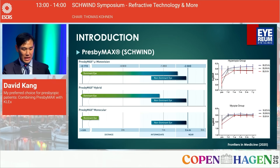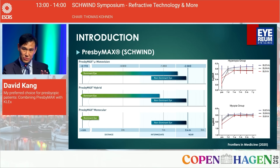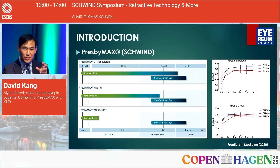This brings us to Presbymax. The common classification shows three iterations of Presbymax, but it is actually only one — the classification is just confusing. What the laser is doing to the near eye is exactly the same for all three iterations. The difference is what's done to the dominant eye: it's a matter of titrating the induction of negative spherical aberration into the dominant eye.